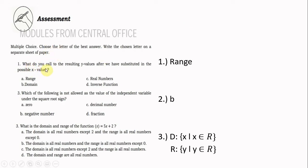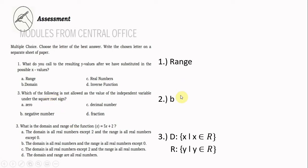Assessment number one: what do you call the resulting y values after we have substituted in the possible x values? The answer is range. Number two: which of the following is not allowed as the value of the independent variable under the square root sign? The answer is negative number.